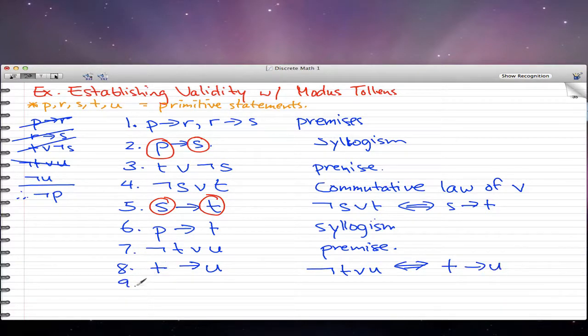Step 9, what we have now is we have p implies u, because p implies t, and t implies u. Cut out the middleman, p implies u. Syllogism again. And then we have the last premise, which is negated u. That's the last premise that we handled.